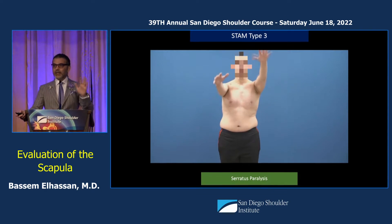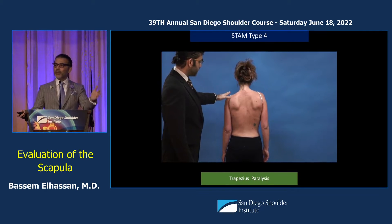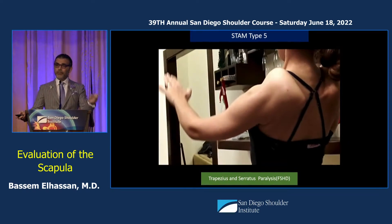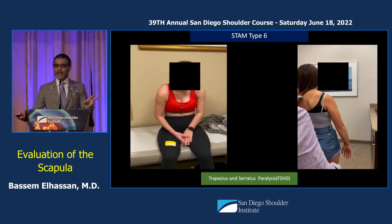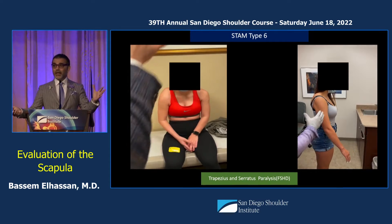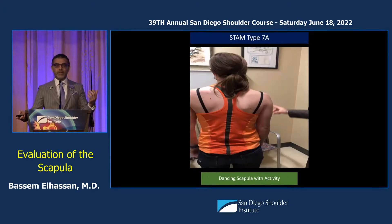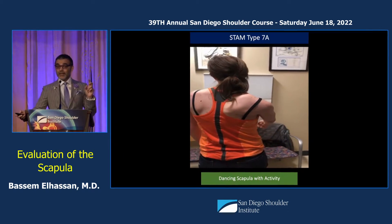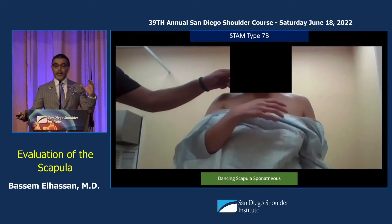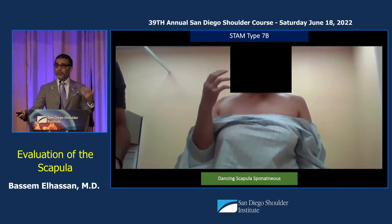STAM 3 is serratus paralysis, and this is what we want to expand beyond — most people only know dyskinesia or paralysis. STAM 4 is trapezius paralysis. STAM 5 is both trapezius and serratus paralysis. STAM 6 is a very difficult one — the patient presents with a locked shoulder anteriorly, cannot move, cannot be reduced, and looks like dystonia, but the muscles are normal with very abnormal activation patterns. STAM 7A is a dancing scapula during attempted motion, and 7B is a scapula dancing regardless of whether the patient moves or not. This covers essentially 95% of scapulothoracic abnormality.